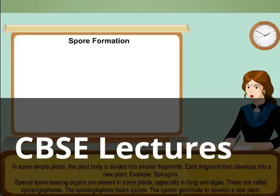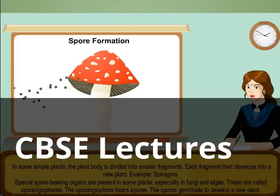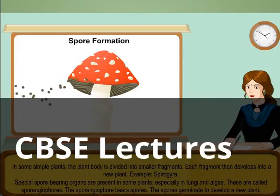Spore formation. Special spore-bearing organs are present in some plants, especially in fungi and algae. These are called sporangiophores. The sporangiophore bears spores, and the spores germinate to develop a new plant.